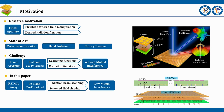However, existing methods limit the integrated regulation of radiation and scattered fields to different polarizations or different bands. Inspired by previous works, this paper proposes a novel array of radiation and scattering function integrated metasurface antennas — the ARCEMA array of 12×12 antenna elements — which can almost independently realize radiation beam scanning and in-band co-polarized scattered field shaping.